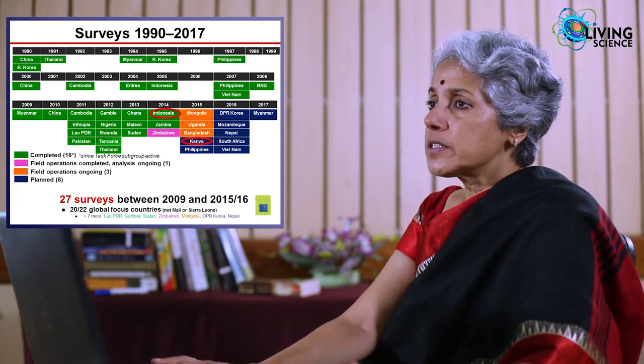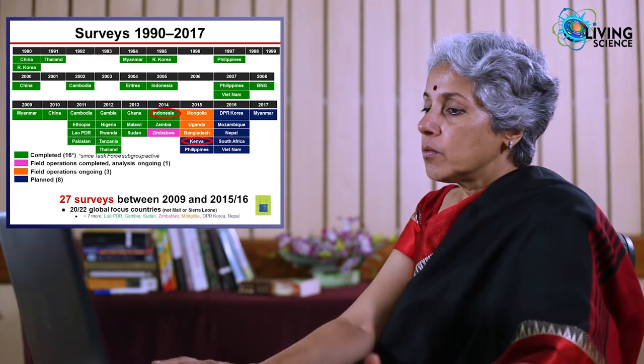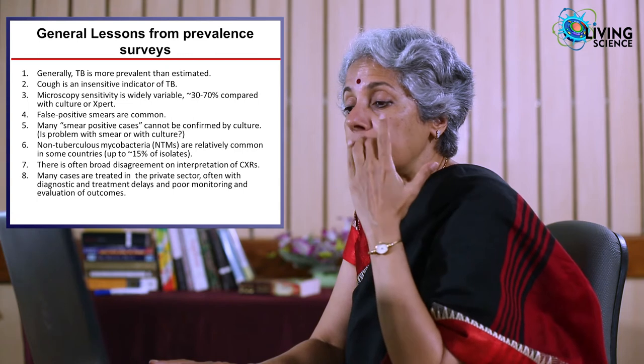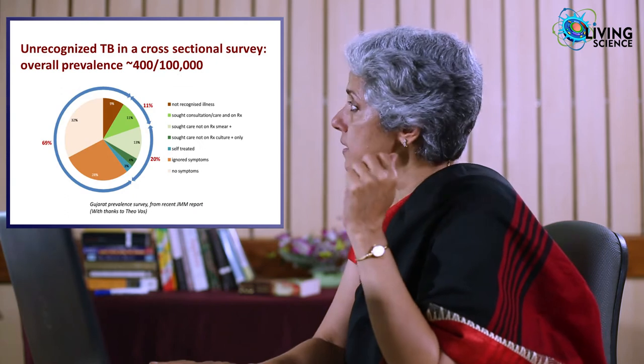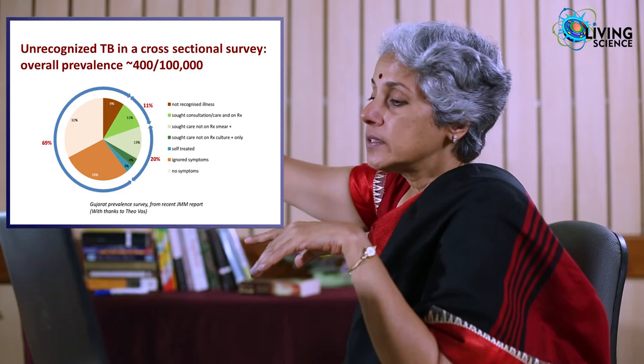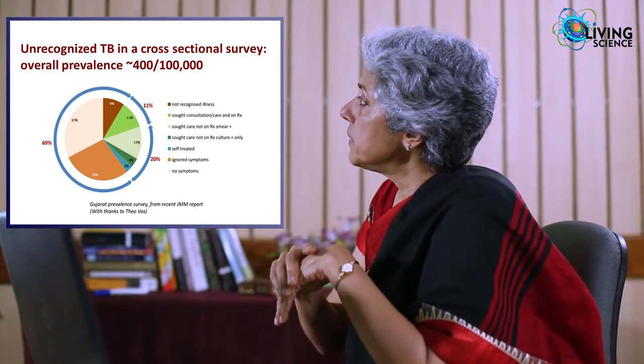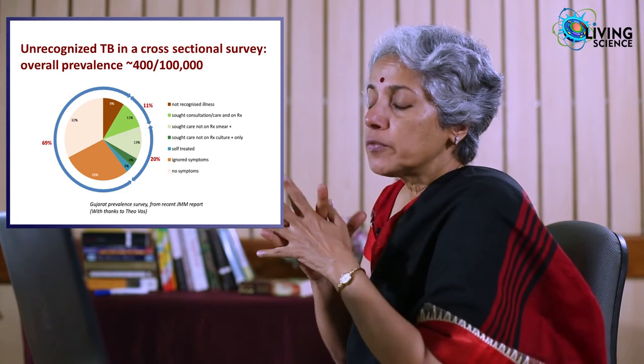Surveys from around India, though India has not yet done a national TB prevalence survey, consistently show TB is much more prevalent than thought, and many people have no symptoms. In a statewide survey done in Gujarat, looking at all people with culture-positive TB — represented as a whole circle — only 11 percent, the green triangle, were on TB treatment. Everybody else had either not been diagnosed or had been diagnosed but not started treatment, showing large numbers of people walking around who are probably infectious without knowing it.